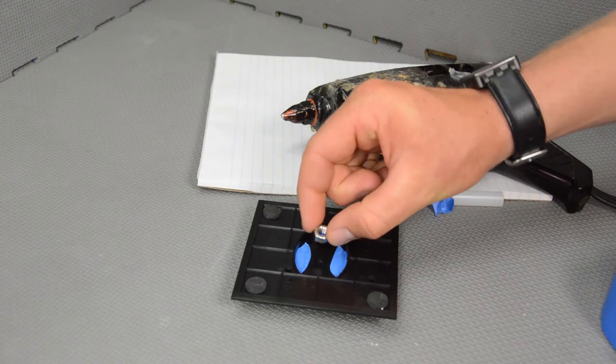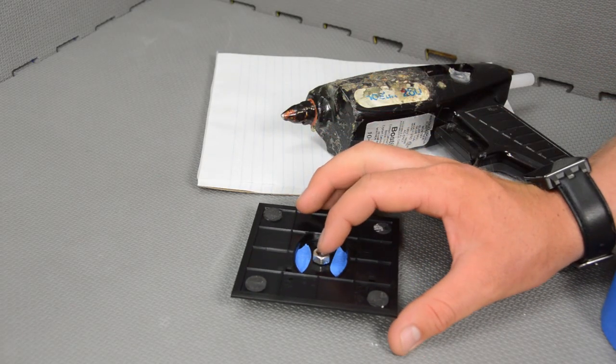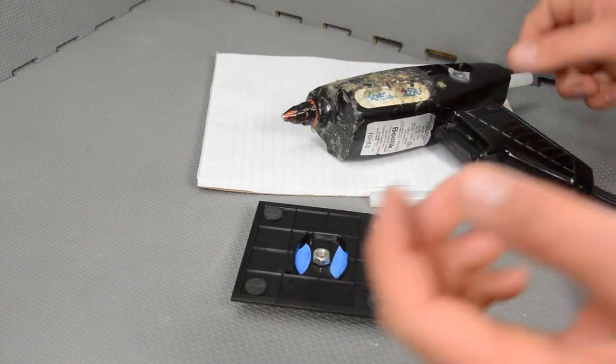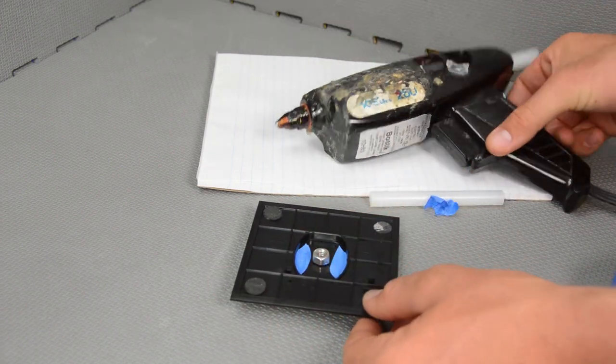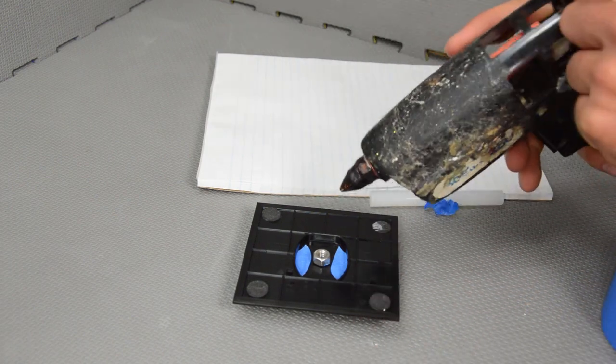With all that done, we can place our nut right into the center of our mount, and then we can grab our glue gun and just start to fill this gap with glue.